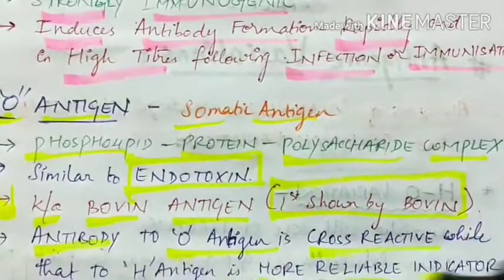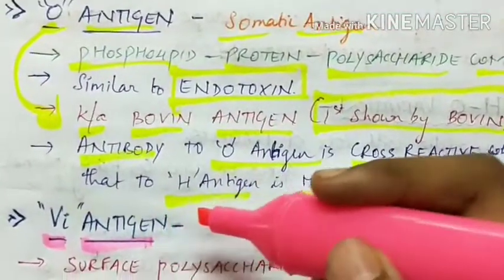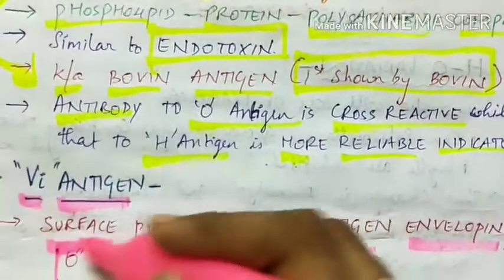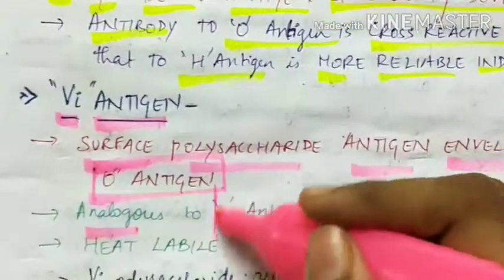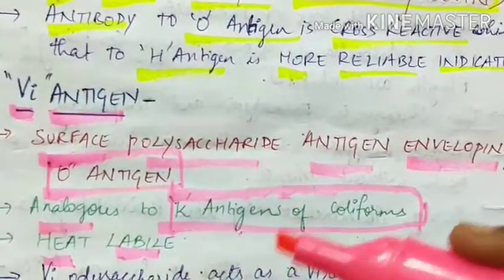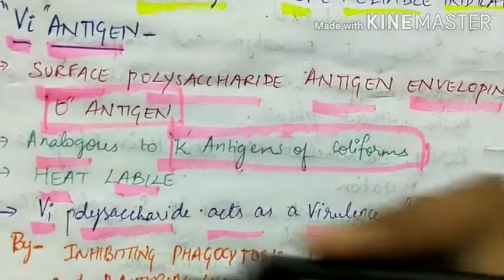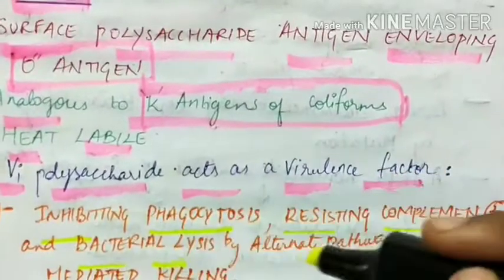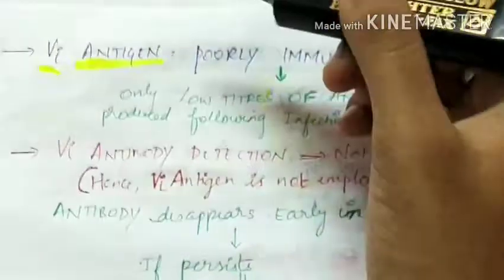Next is Vi antigen, that is surface antigen. It is a surface polysaccharide antigen enveloping the O antigen. So this Vi antigen covers the O antigen. It is analogous to the K antigens of the coliforms. This Vi antigen is heat-labile and the Vi polysaccharide acts as a virulence factor by inhibiting phagocytosis, assisting complement activation and bacterial lysis by alternate pathway, and peroxide-mediated killing.